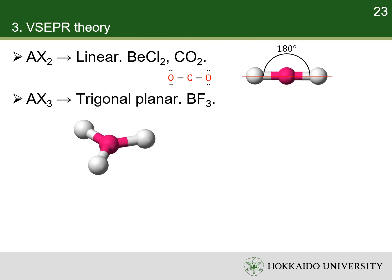An AX3 molecule has three ligands and no lone pairs, that is, three electron pairs. The biggest possible angle between them is 120 degrees, and the three ligands are in a plane. So an AX3 molecule has a trigonal planar shape. A typical example of AX3 molecules is boron trifluoride.